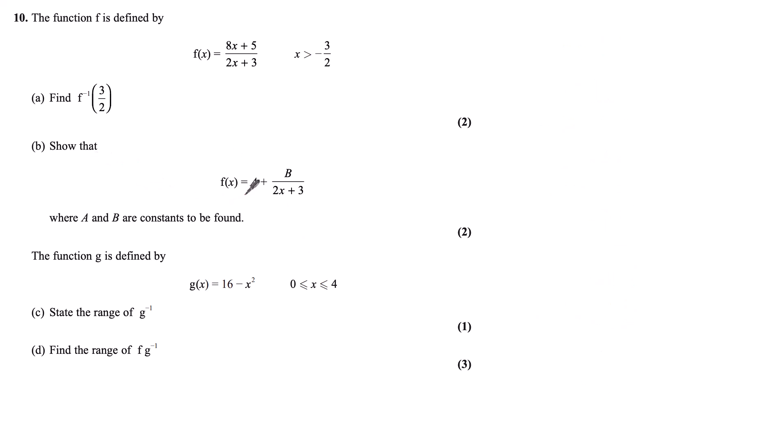In part b, I want to show that f(x) equals some constant a plus b/(2x + 3), where a and b are constants to be found. Now there are a couple of different ways you can go about doing this, but I like to write it out equal to each other and then compare coefficients. So starting from my f(x) = a + b/(2x + 3), I'm going to substitute my f(x) as (8x + 5)/(2x + 3). Now in order to equate coefficients, it's easier to multiply both sides up by 2x + 3. So I have 8x + 5 = a(2x + 3) + b.